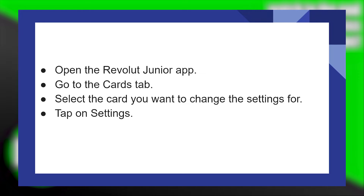Changing Revolute Junior card settings is very easy to do. Today I'm going to show you how to do it. To change the Revolute Junior card settings, the first thing you need to do is open up the Revolute Junior application. Then go to the card tab and select the card you want to change the settings for.